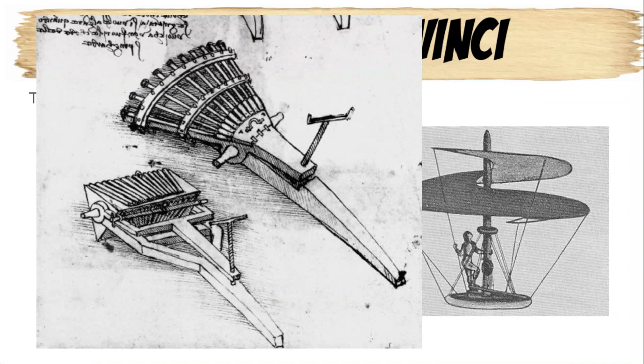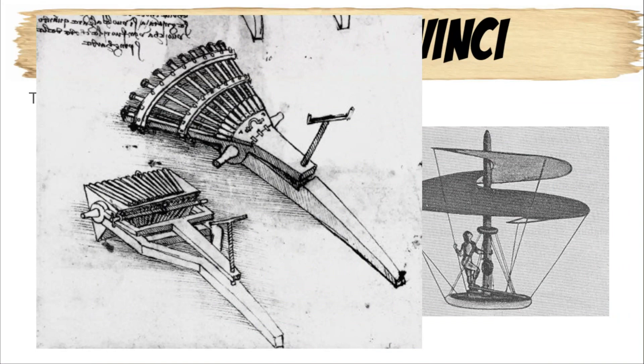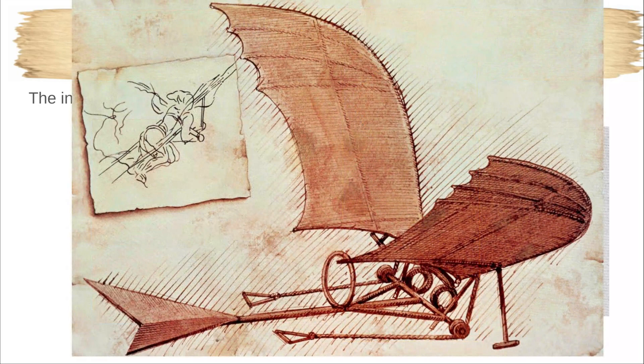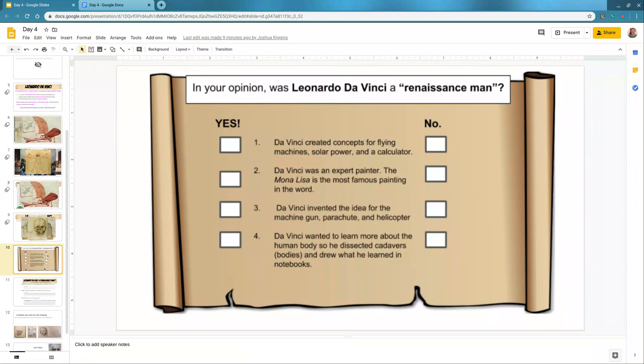Da Vinci was also an inventor — he made different inventions. You can see this looks almost like a helicopter. Another invention he had was a parachute, and a flying machine — kind of like an airplane. While Leonardo is credited as an inventor for these machines, he did not actually build any of them; these were only drawings that he did.